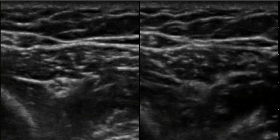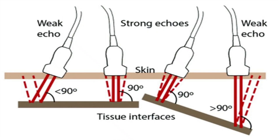As expected from the probe and beam angle position relative to the nerve, the nerve image on the left can be easily seen compared to the image on the right.